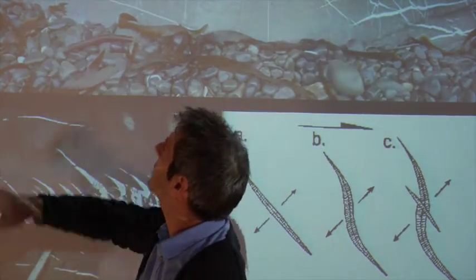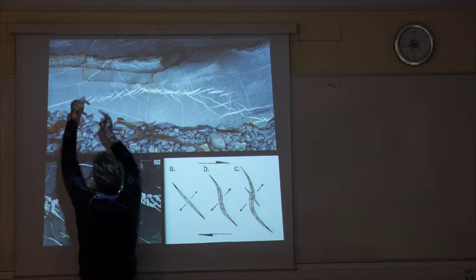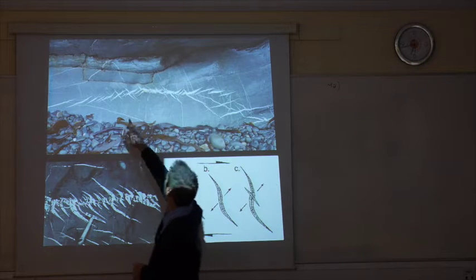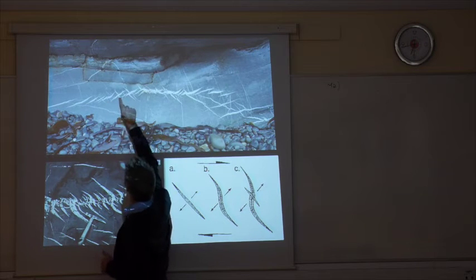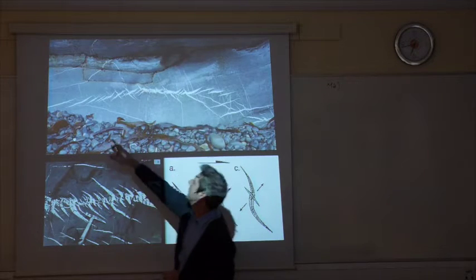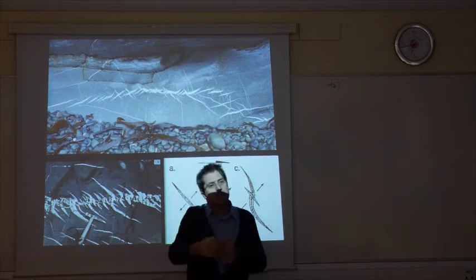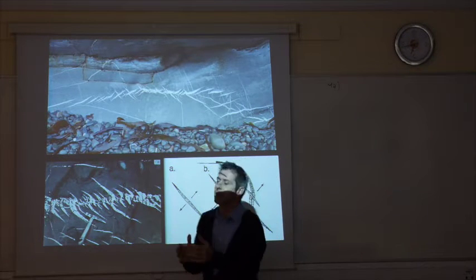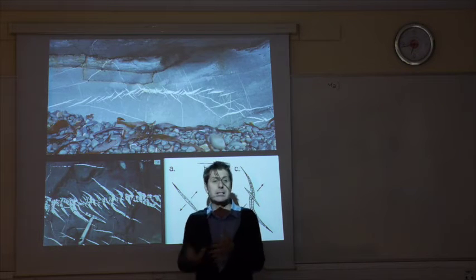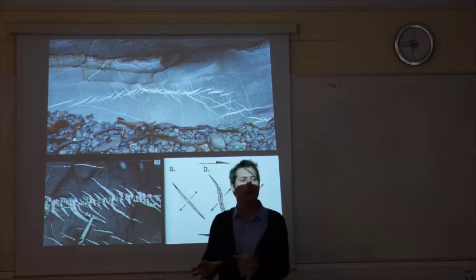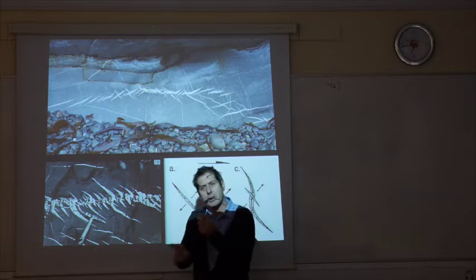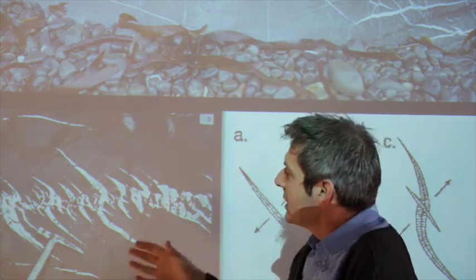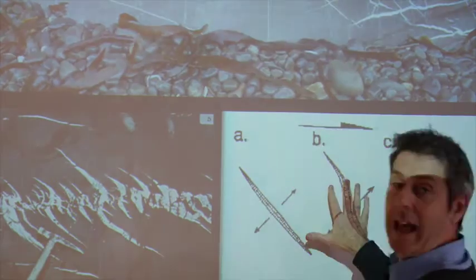Looking at these en echelon veins, sigma-1 was in this direction and sigma-3 was in that direction — it's a little bit of left lateral shear. But you can see it actually cuts through an earlier set of veins going in a different direction, which was a right lateral. So this is giving you a history: first a right lateral zone of fracturing and fluid flow, then a switch in the stress regime — sigma-2 and sigma-3 can switch quite easily when the state of stress changes.